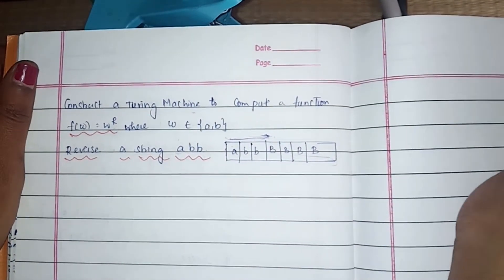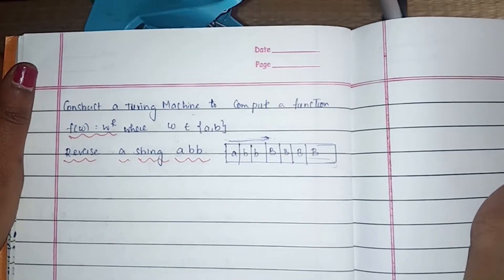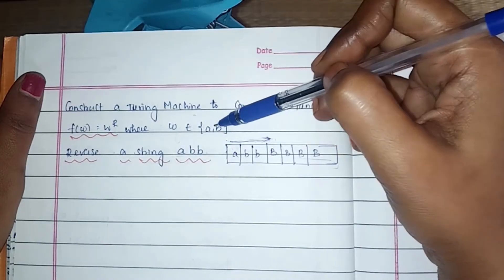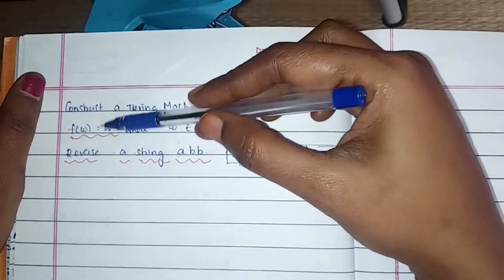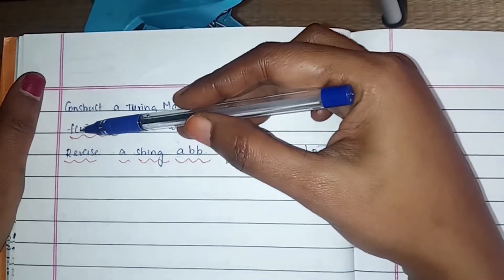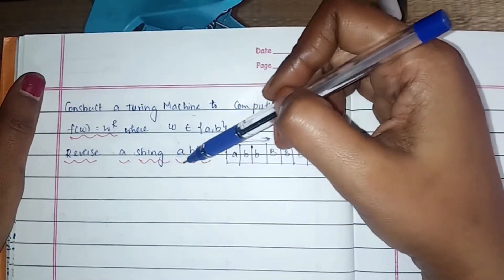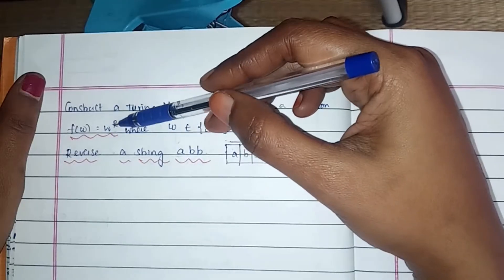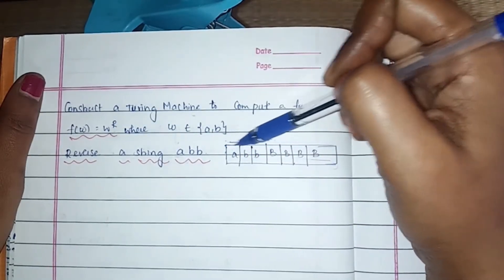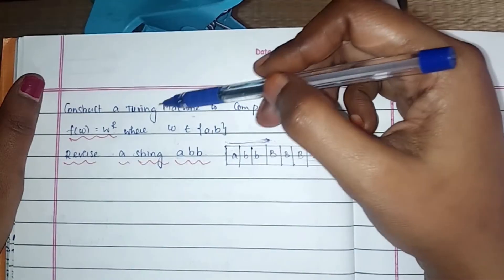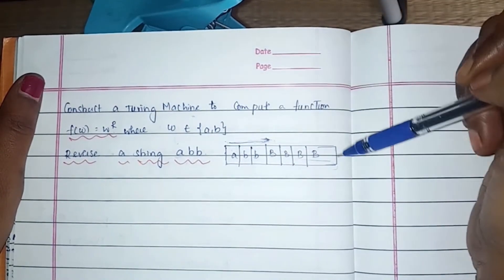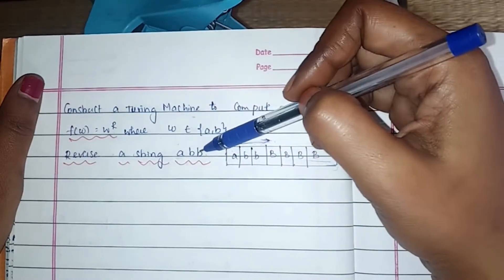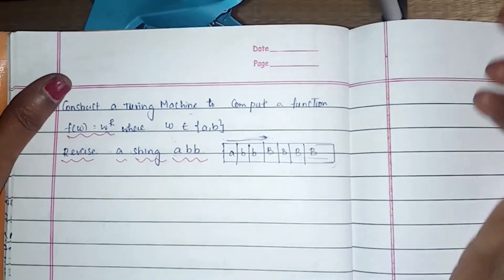Welcome to the session. We are going to see the construction of a Turing machine to compute a function f(w) = w^r, where w belongs to {a, b}. It is the reverse of a particular string. Whatever string is given as input — for example, 'abb' — we have to get the reverse, which means 'bba' on the tape after computing this operation.